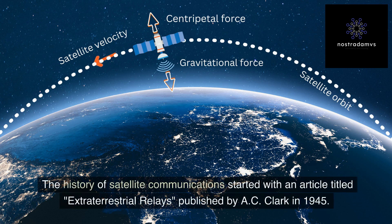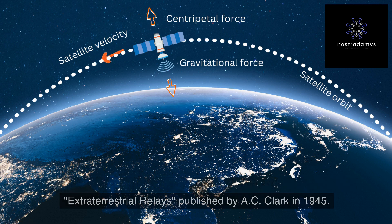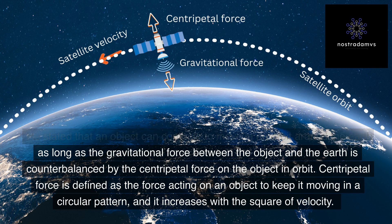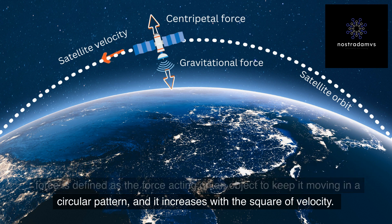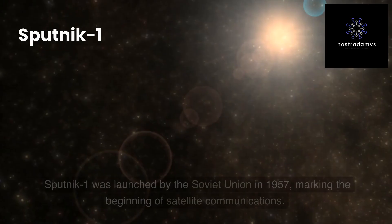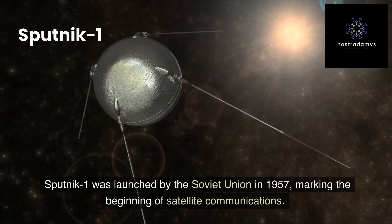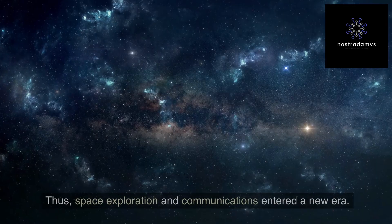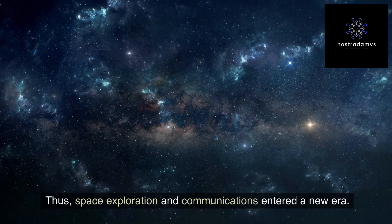The history of satellite communications started with an article titled 'Extraterrestrial Relays' published by A.C. Clarke in 1945. He stated that an object can continue to move in an orbit around the Earth as long as the gravitational force between the object and the Earth is counterbalanced by the centripetal force on the object. Centripetal force is defined as the force acting on an object to keep it moving in a circular pattern, and it increases with the square of velocity. Sputnik 1 was launched by the Soviet Union in 1957, marking the beginning of satellite communications, and space exploration entered a new era.